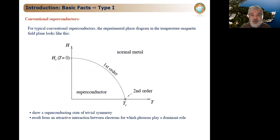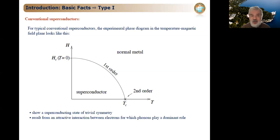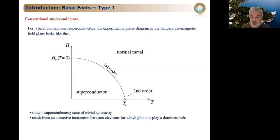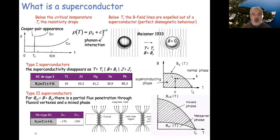The superconducting transition is a second-order transition: the order parameter goes continuously to zero at the critical temperature as a square root. However, there are two types of superconductors — Type I and Type II — which differ in their behavior, as you discussed in tutorials.